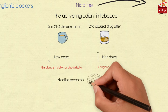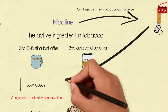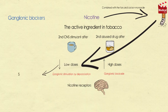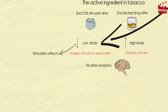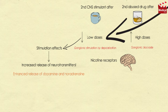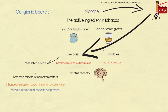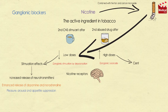Nicotine receptors exist at a number of sites in the CNS which participate in the stimulant actions of the drug. Cigarette smoking or administration of low doses produces stimulation effects that result from increased release of neurotransmitters. For example, enhanced release of dopamine and noradrenaline may be associated with pleasure, arousal, and appetite suppression. High doses of nicotine result in central respiratory paralysis.